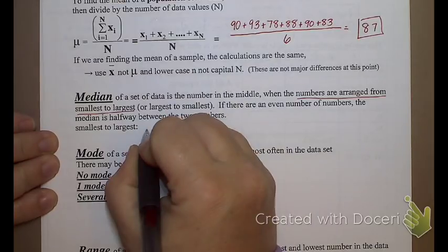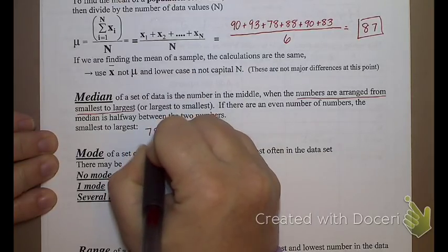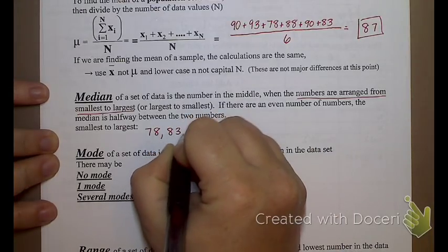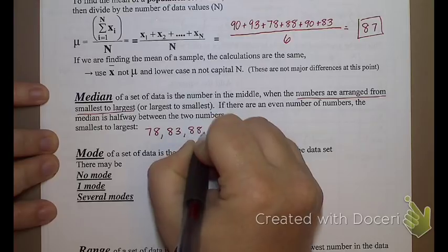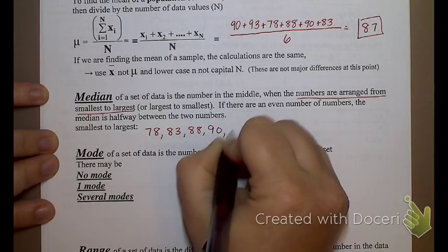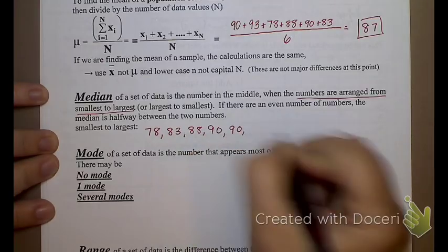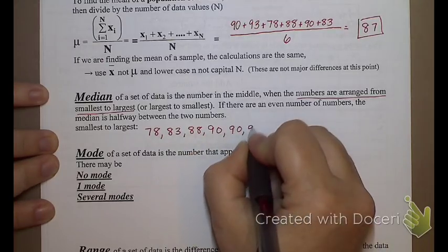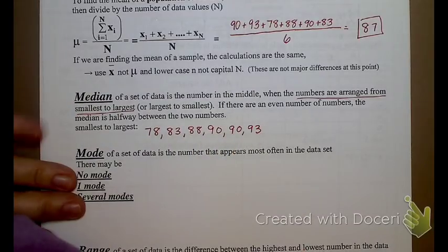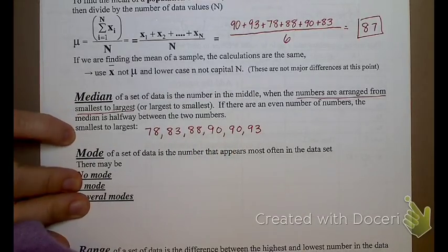So, what's the smallest number on my list? Next smallest number. Next one. 88. Next one. 90, and then 90 again. And then what? 93, is that it? 1, 2, 3, 4, 5, 6. That's it.